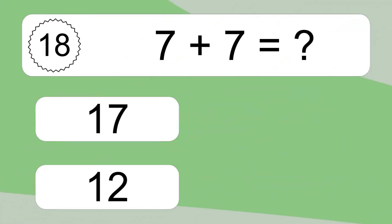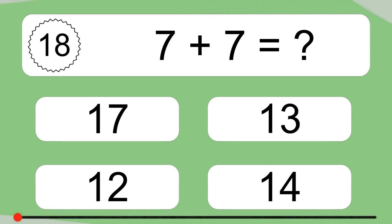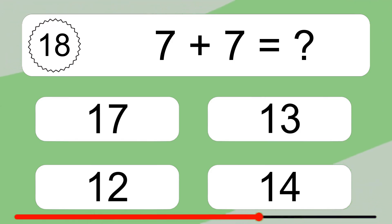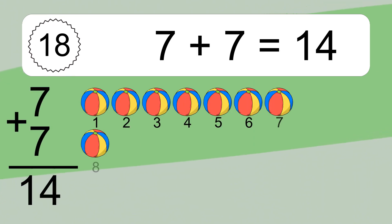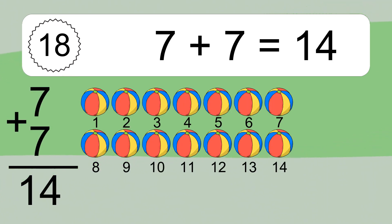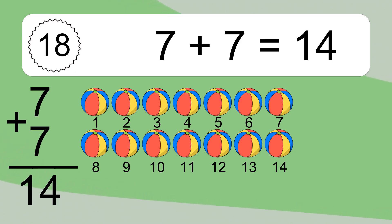7 plus 7 equals what? 7 plus 7 equals 14. Let's count it: 1, 2, 3, 4, 5, 6, 7, 8, 9, 10, 11, 12, 13, 14.